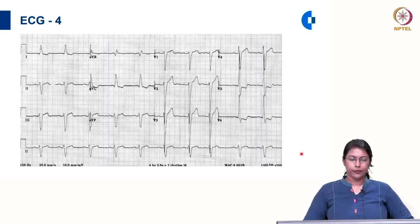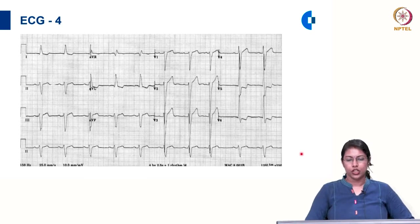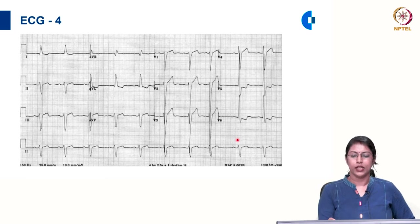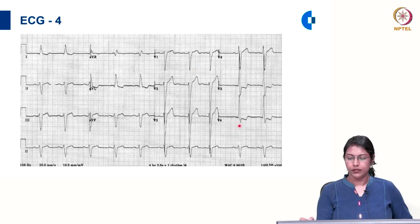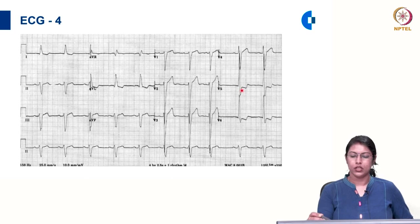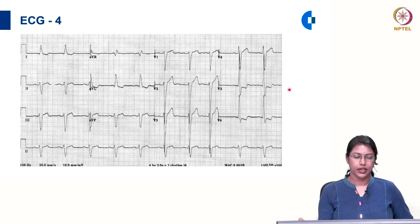In ECG 4, concentrating on the V1 to V6 chest leads and applying the Sokolow-Lyon index: the amplitude of S in V1 is approximately 20 millimetre and the amplitude of R in V6 is approximately 25 millimetre. The sum of these two is more than 35 millimetre, satisfying the Sokolow-Lyon index. The amplitude of R in AVL is also more than 11 millimetre, which is also suggestive of LVH.